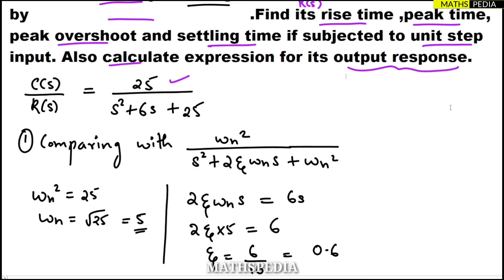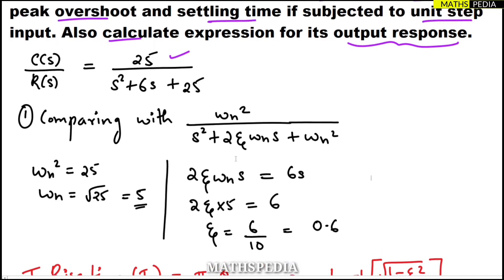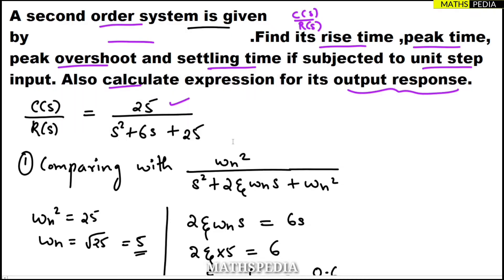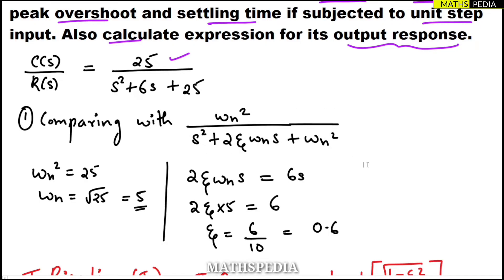Whenever you need to find rise time and related quantities, the first thing you need to find is the natural frequency omega_n and the damping ratio zeta. These two are very important. To find them, compare the given transfer function with the standard second order transfer function, which is omega_n² / (s² + 2·zeta·omega_n·s + omega_n²).